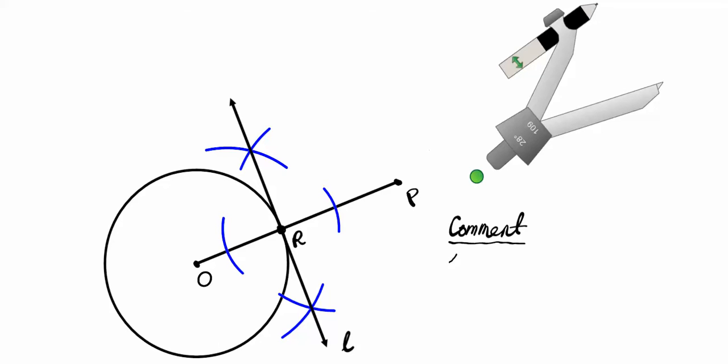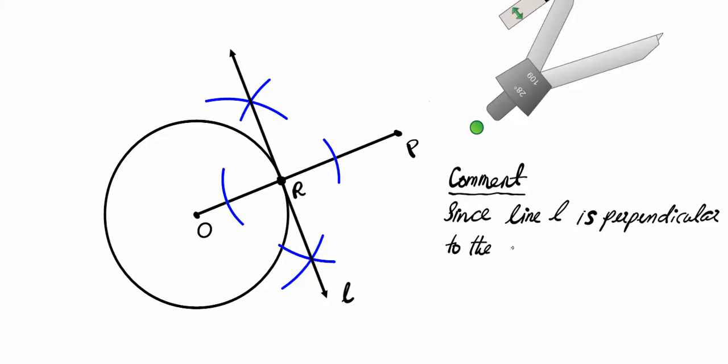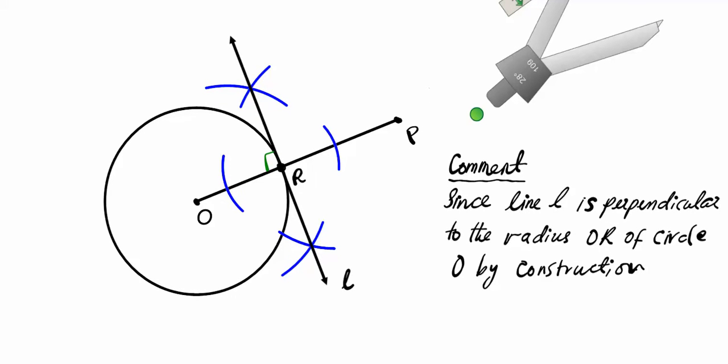Since line L is perpendicular to the radius OR of circle O by construction, we know for a certainty that this angle right here is 90 degrees. Since line L is perpendicular to the radius OR of circle O at its endpoint, it has to be at the endpoint of the radius.